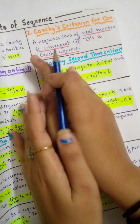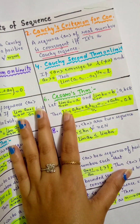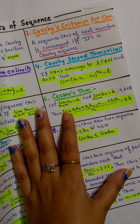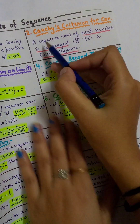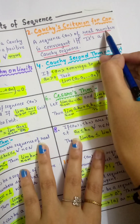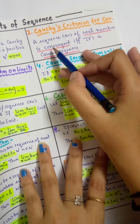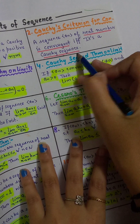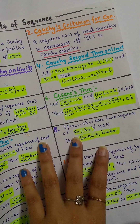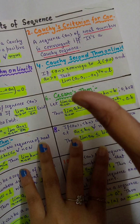Next, what is the Cauchy criteria for convergence? This is a short note for revision. A sequence AN of real numbers is convergent if and only if it is a Cauchy sequence.